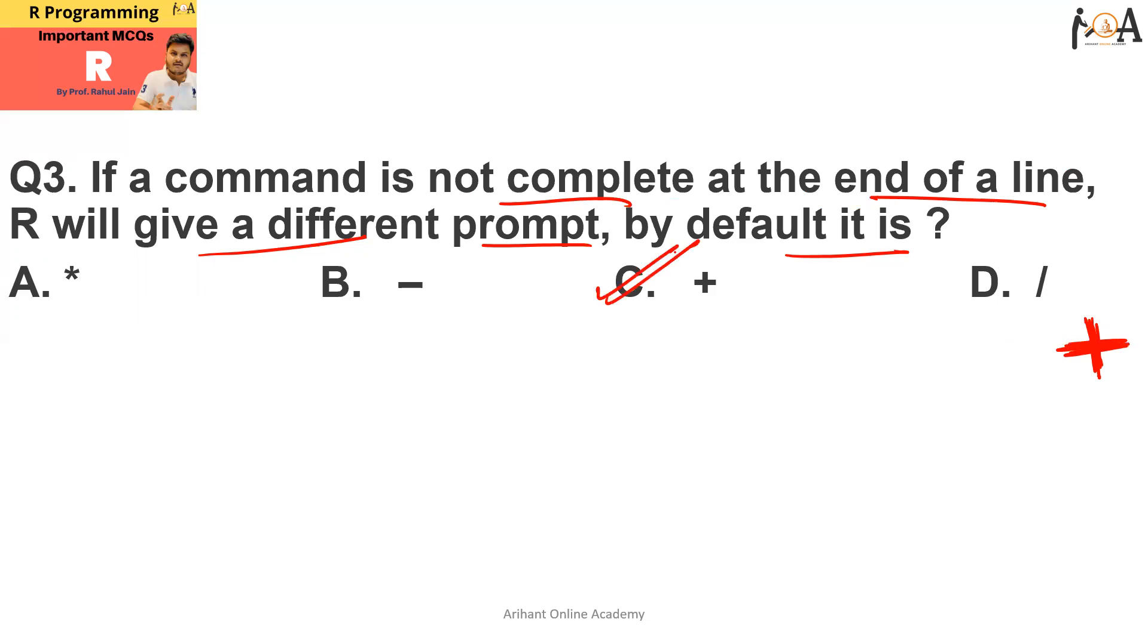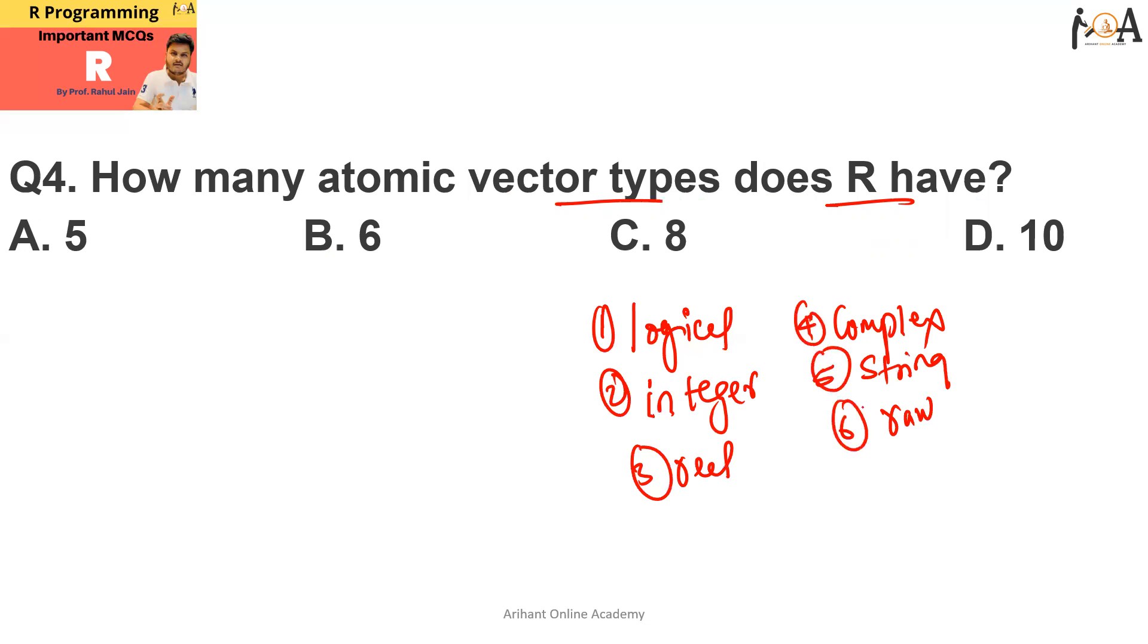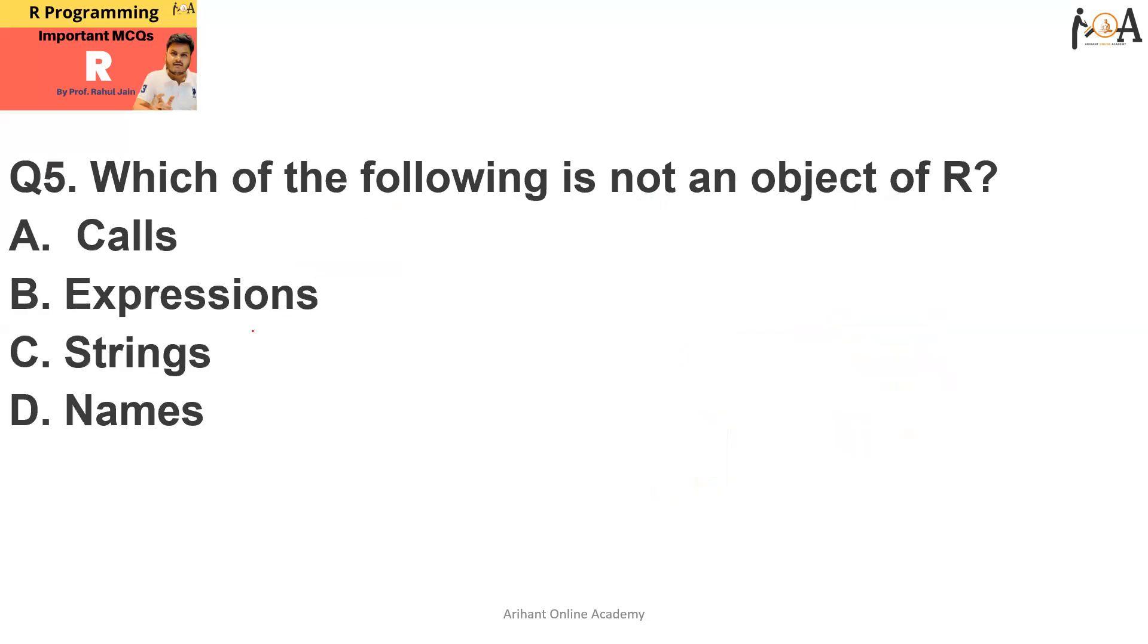Question number four is how many atomic vector types does R have? If we talk about R programming language, R basically has a logical vector, integer, real, complex, string, and raw. Basically, R programming has six types of atomic vector types, and these are those six types. So option B is the correct answer.